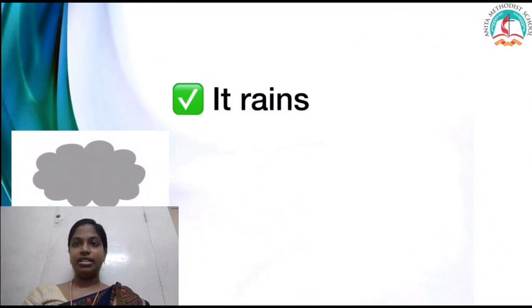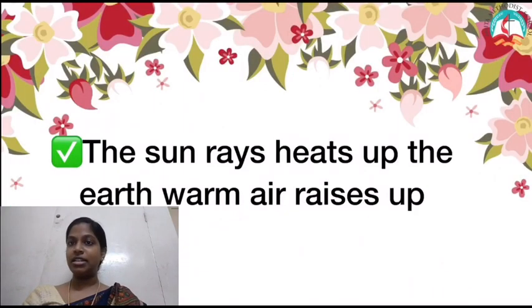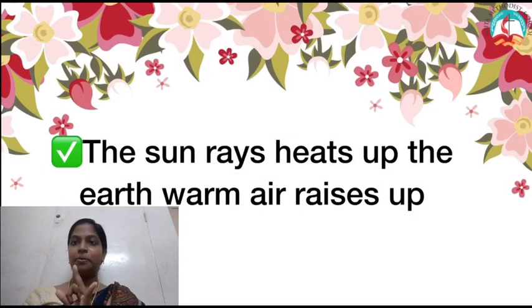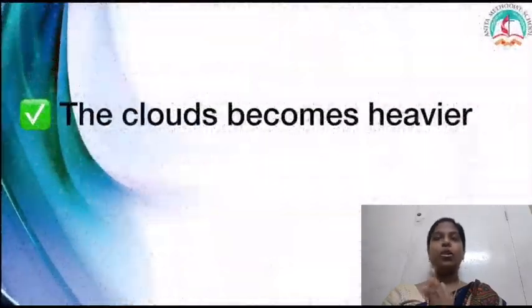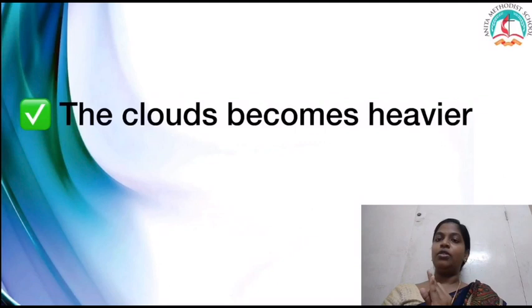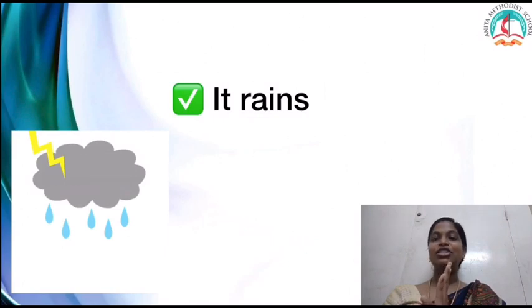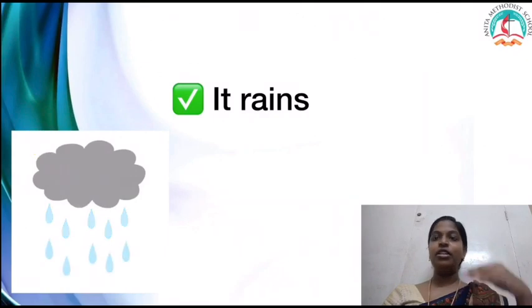Now, did you understand what conventional rainfall is and how it occurs? Step 1: The sun heats the earth's surface and warm air rises up. Step 2: As the air rises, it cools and water vapor gets collected in the clouds. Step 3: The clouds become heavy and large. Step 4: Thunder and storm occur. When I say conventional rainfall, you have to quickly recall all 4 steps, children.